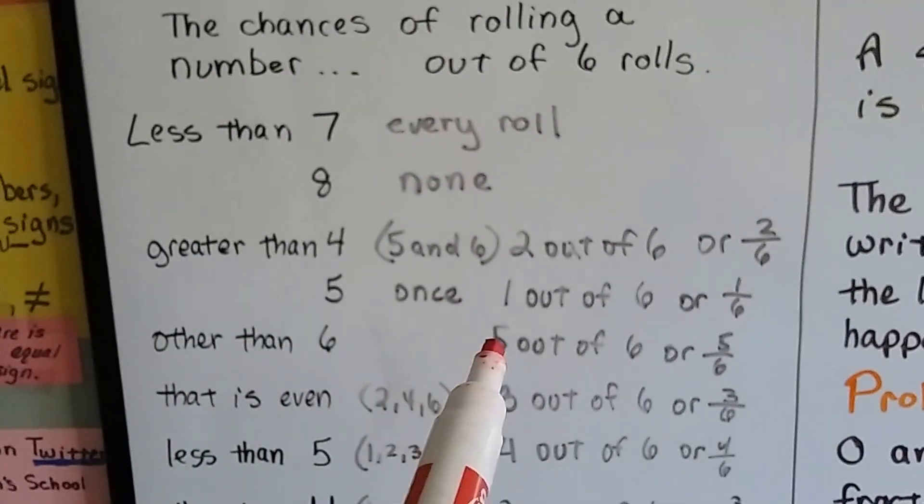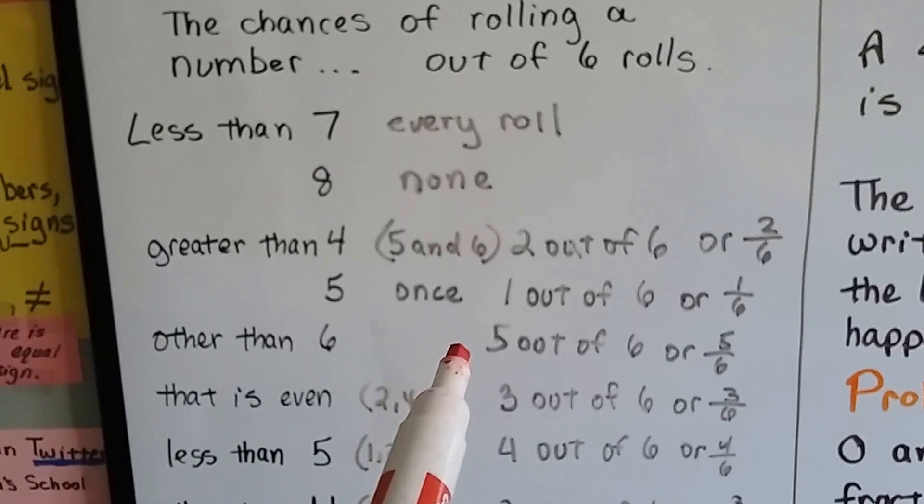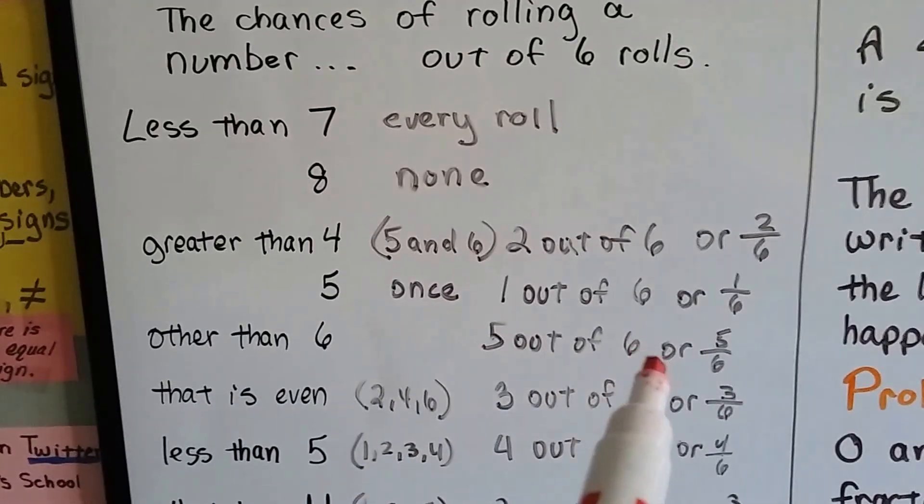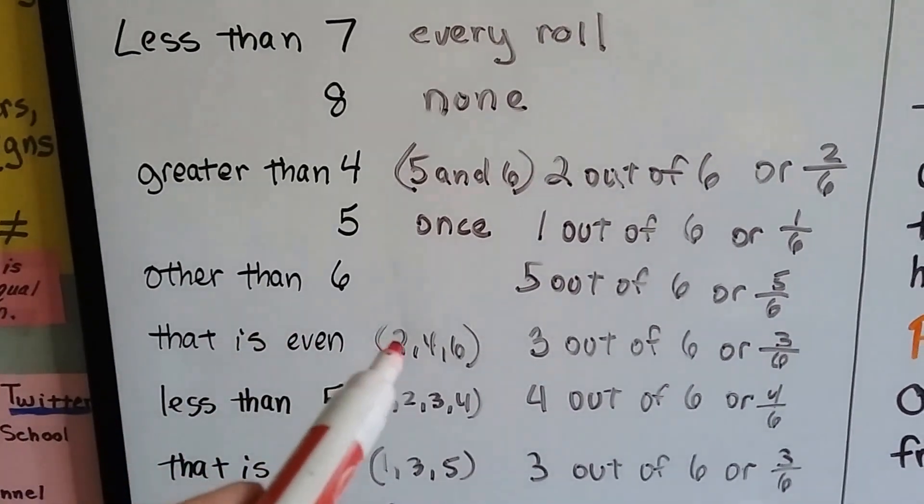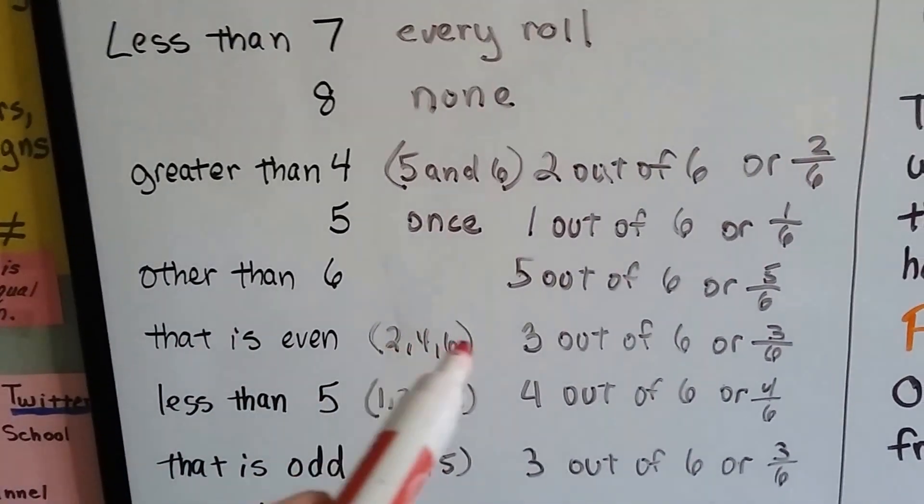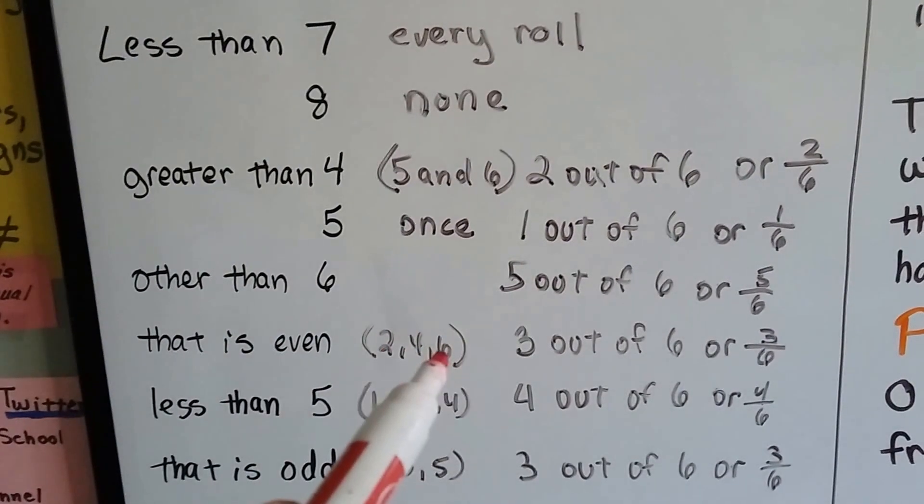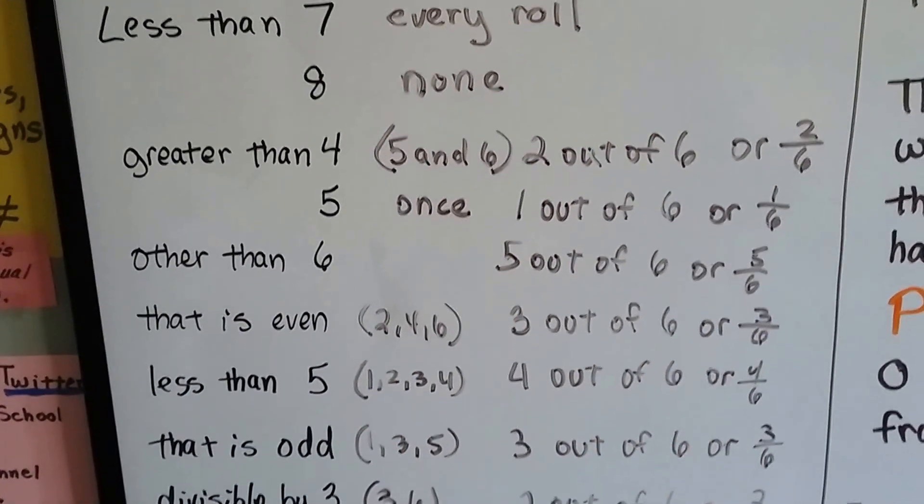The chance of rolling something other than a six? Well, there's a one, two, three, or five, so there would be five out of six chances of doing that, or a five-sixth chance. How about the chance that it's an even number, a two, four, or six? Well, that would be three of the numbers on the die, so that's three out of six, or three-sixths.